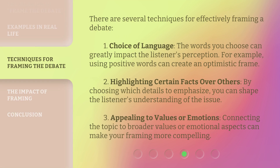There are several techniques for effectively framing a debate. One: choice of language. The words you choose can greatly impact the listener's perception — for example, using positive words can create an optimistic frame. Two: highlighting certain facts over others. By choosing which details to emphasize, you can shape the listener's understanding of the issue. Three: appealing to values or emotions. Connecting the topic to broader values or emotional aspects can make your framing more compelling.